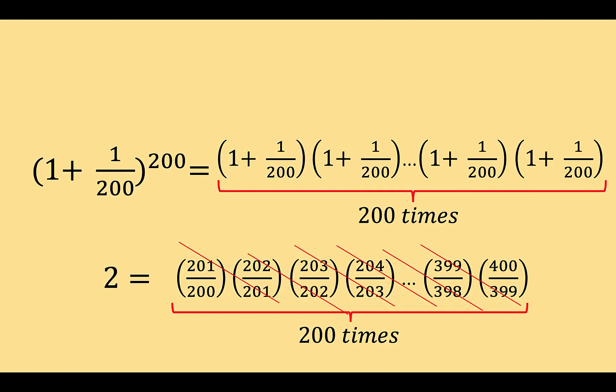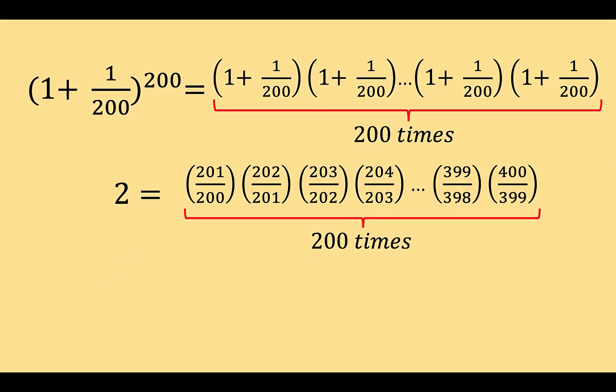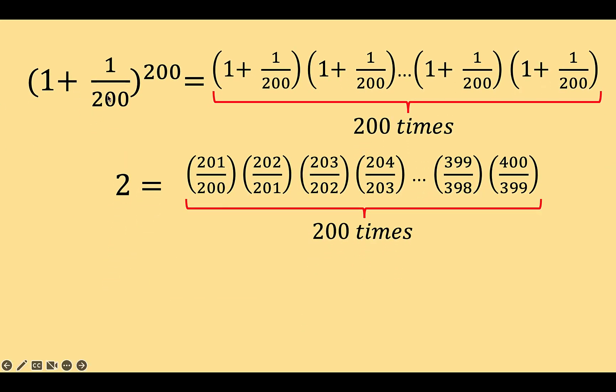So we are going to work with these two expansions, one for 1.005 raised to 200 and the other one for 2. Now let's look at this first factor here, 201 over 200. This can be written as a mixed number 1 plus 1 over 200.